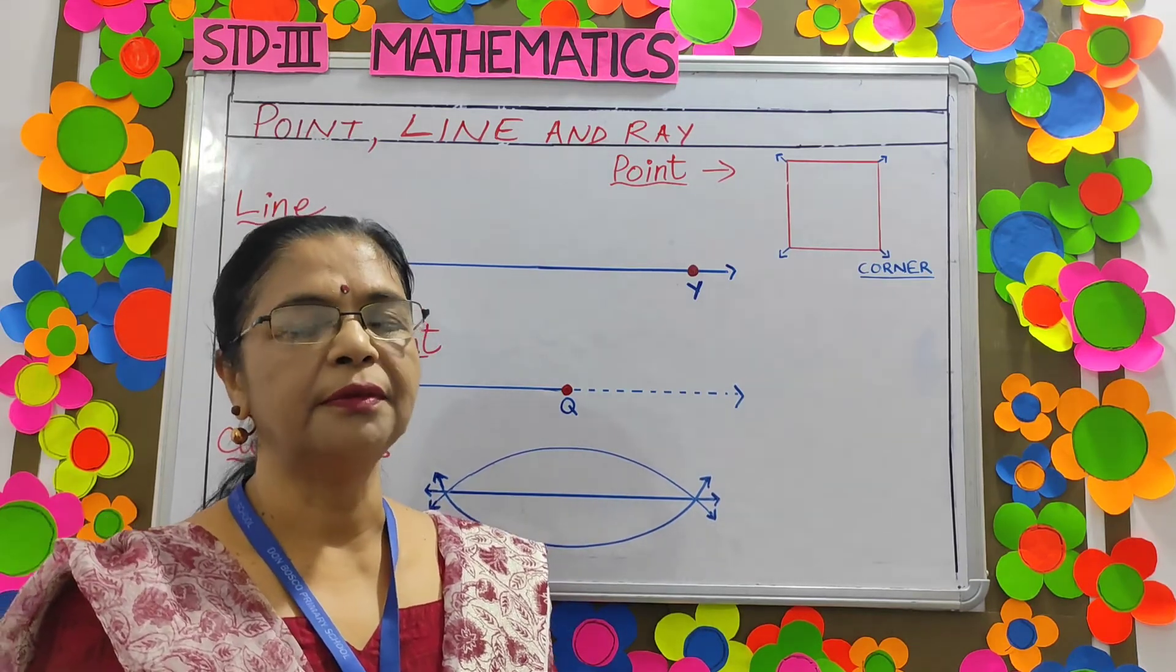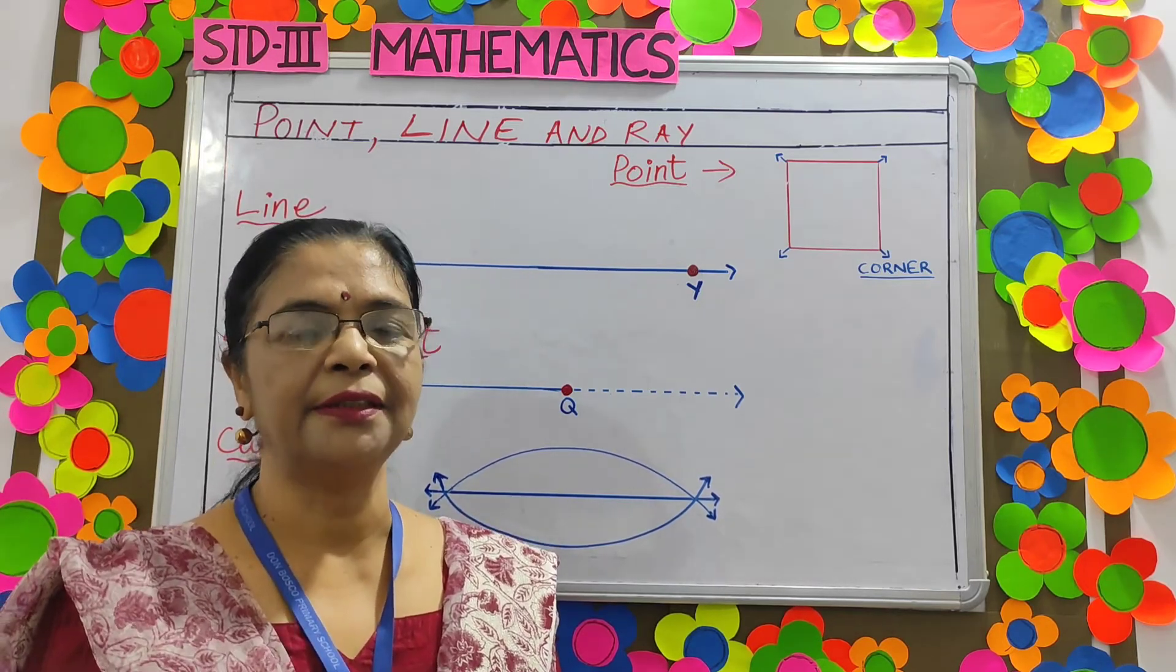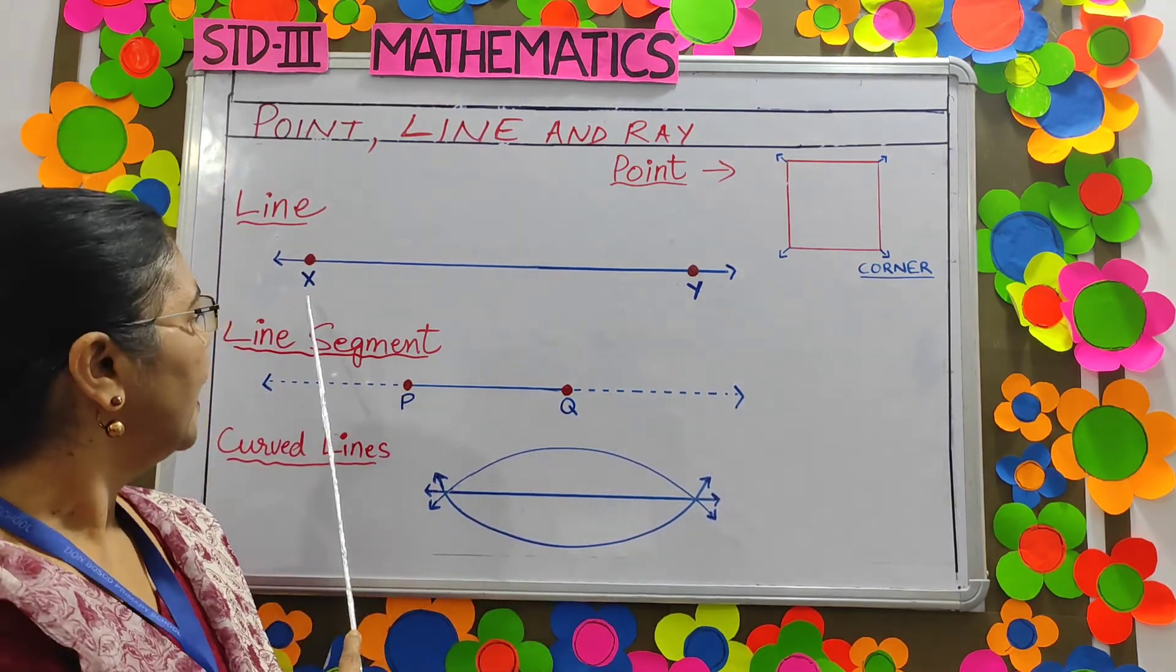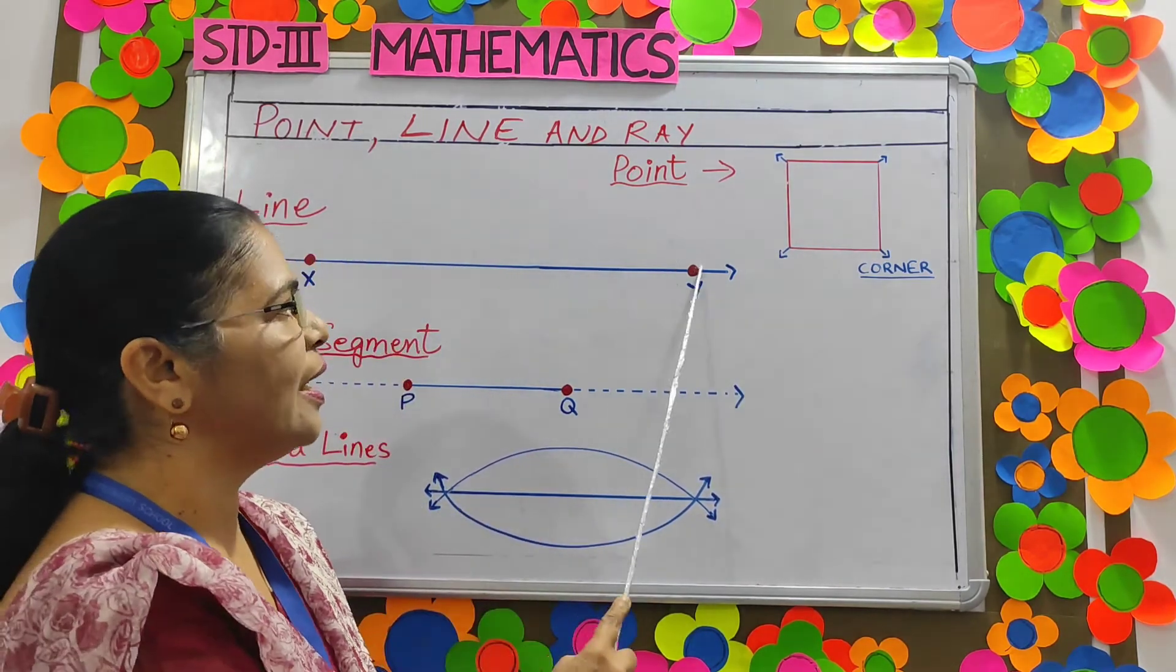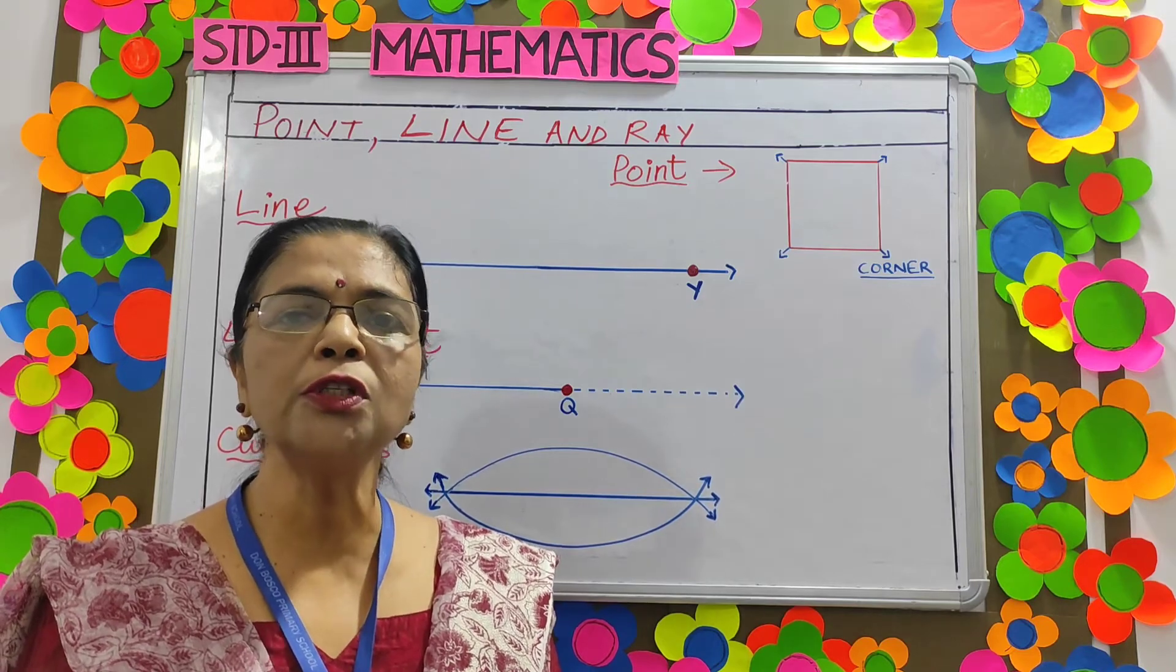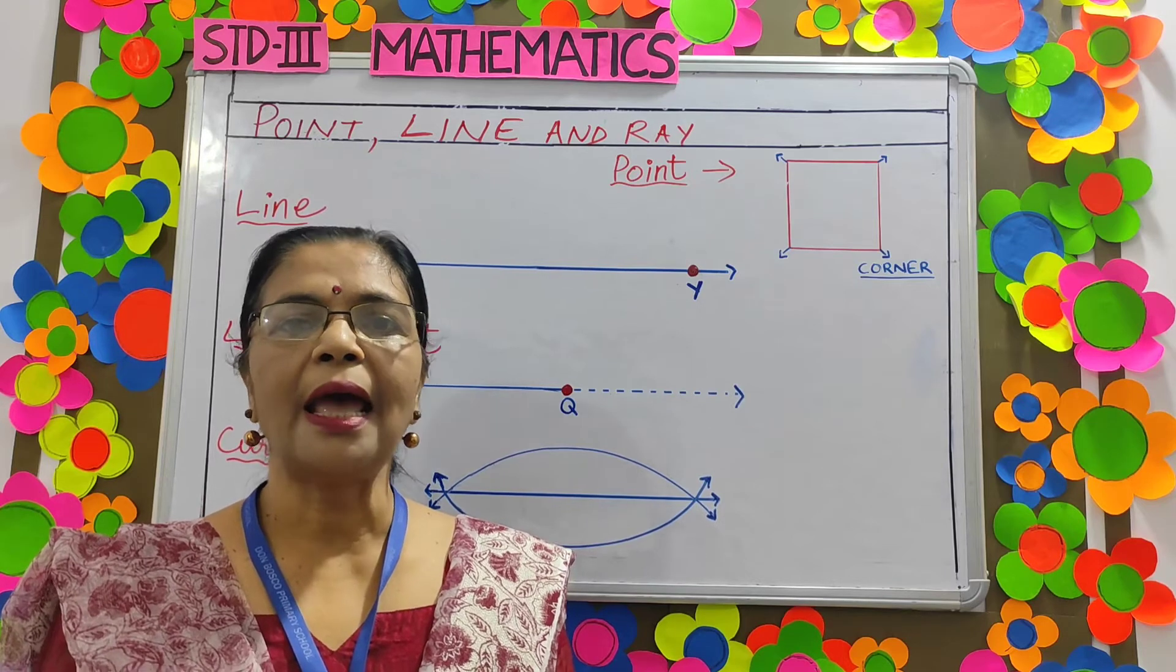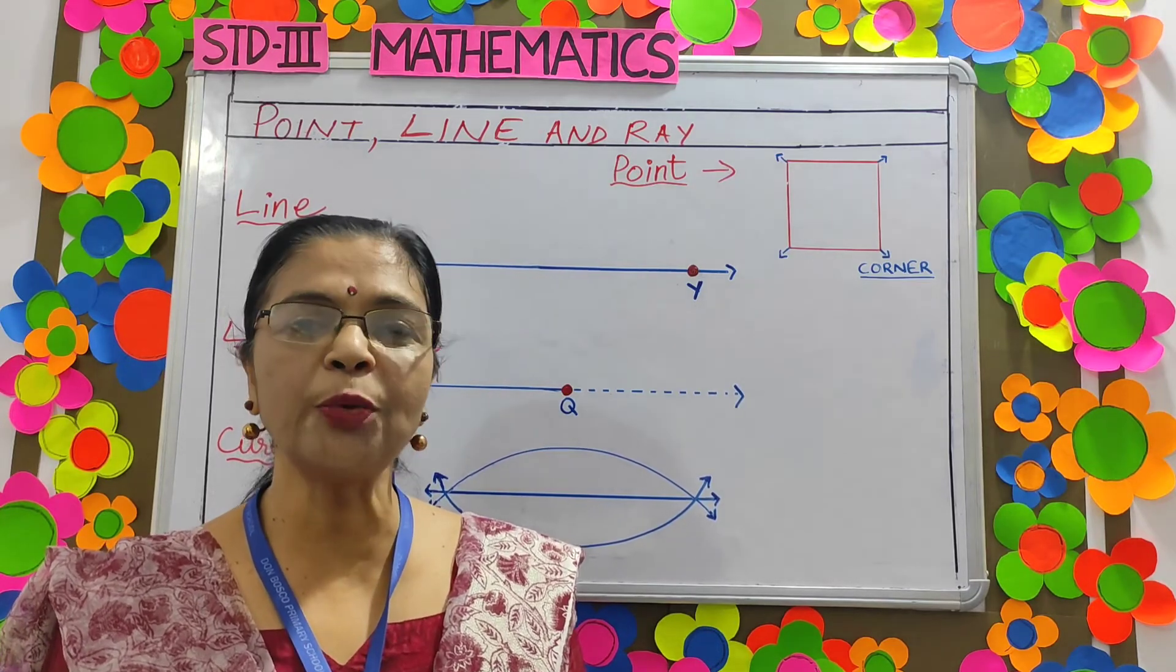A line. It has neither a beginning nor an end. It continues indefinitely on both ends. Here X and Y are two points on the line. The arrows show that the line continues on both ends. A line has only length and no thickness. The length of the line cannot be measured.